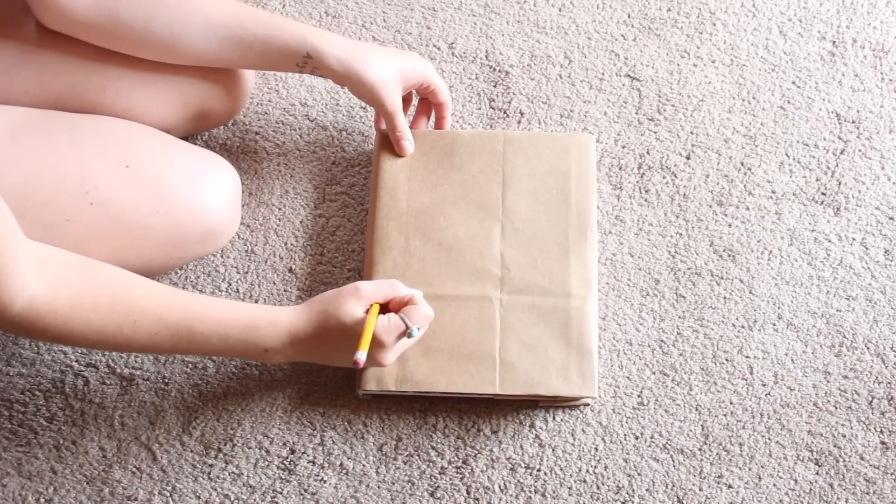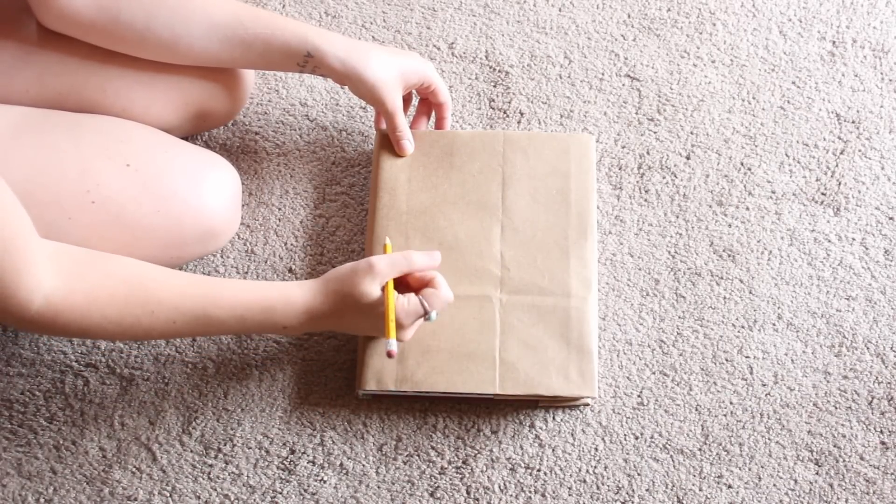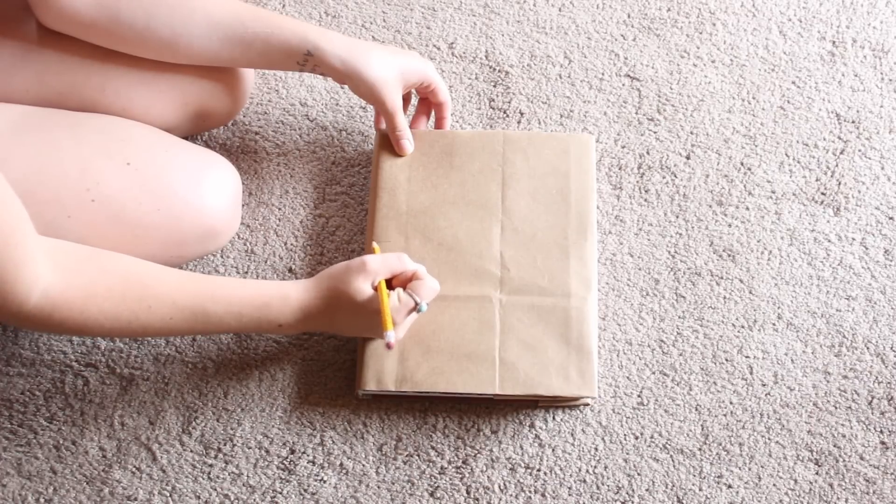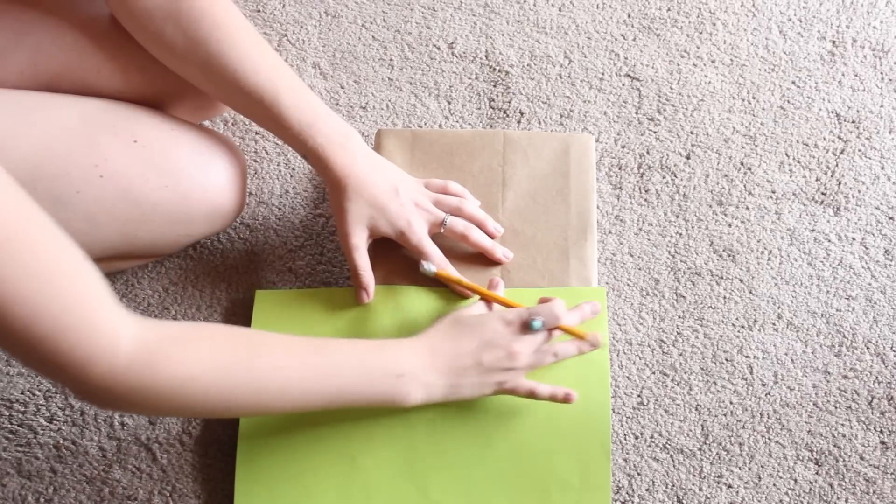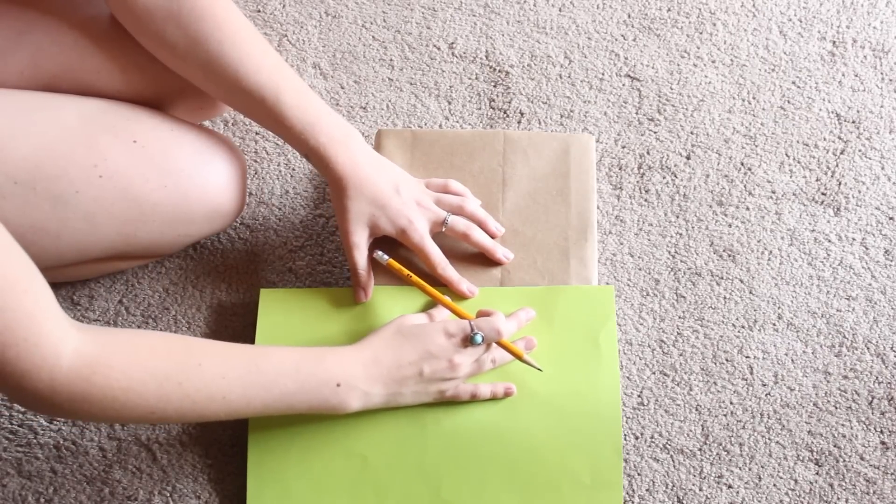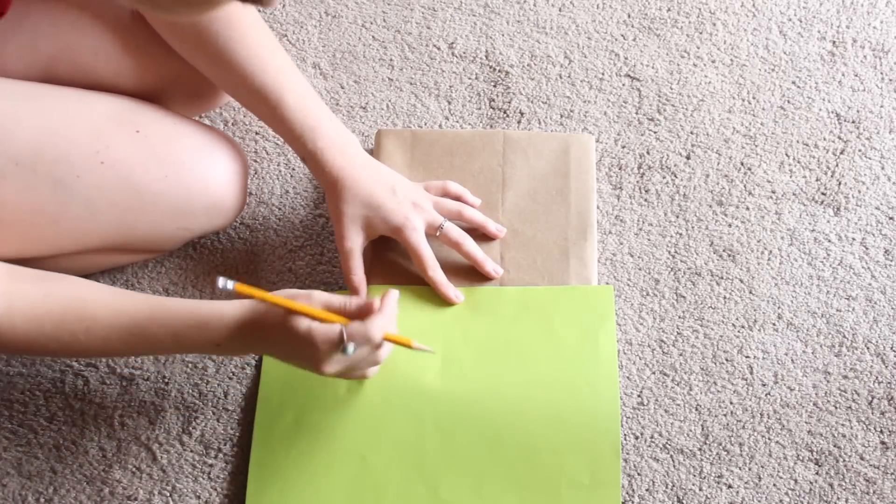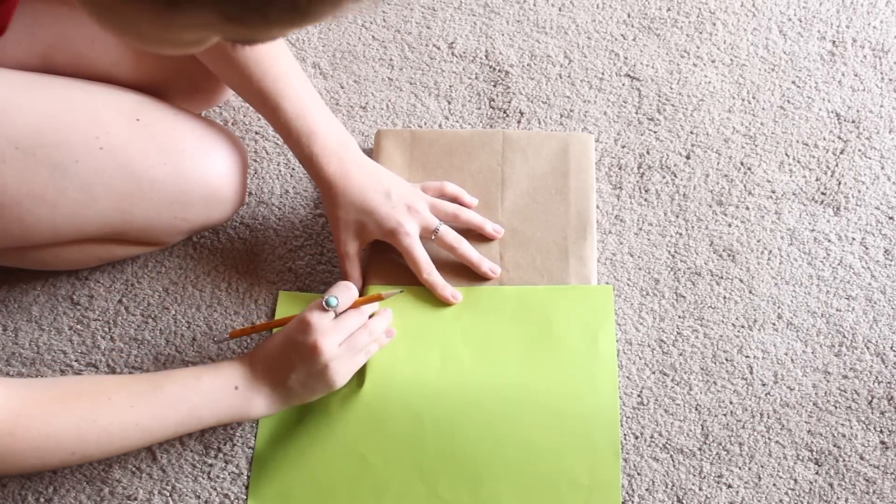So you're going to start off by just taking a pencil and your textbook and you're going to mark where you want your two pockets to be because we're going to create two pockets on the front of this book. So then you're going to take your first paper, the one that you want to be the bottom pocket.